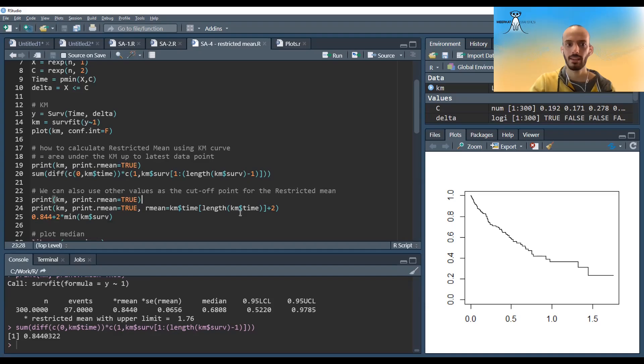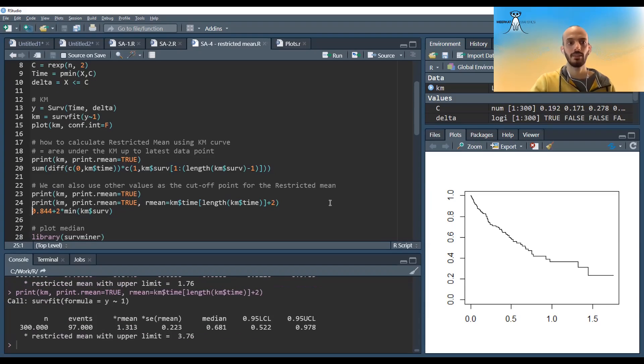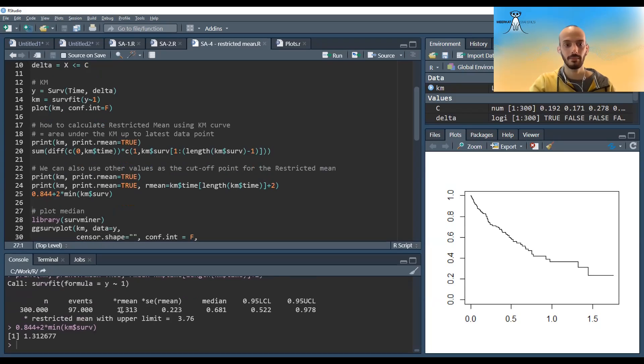But we can also choose a different cutoff point. For example, this is how it is with the regular cutoff point, which is just the last time in our data, but we can, let's say, add another two. And you can see that it gives us exactly the same.